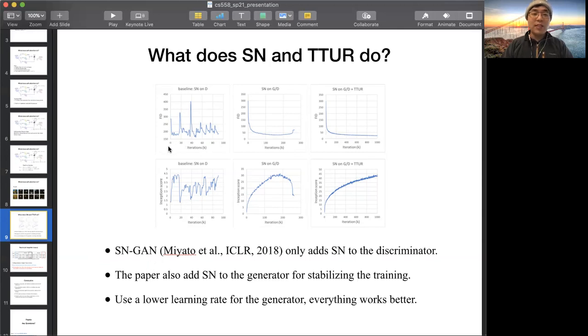Note that these two techniques are tricks for training. Originally, SN-GAN only adds the spectral normalization to the discriminator. Here we can see that the loss function is unstable. Later, this paper also adds the spectral normalization to the generator for stabilizing the training. In the second column, we can see the loss function is more smooth.